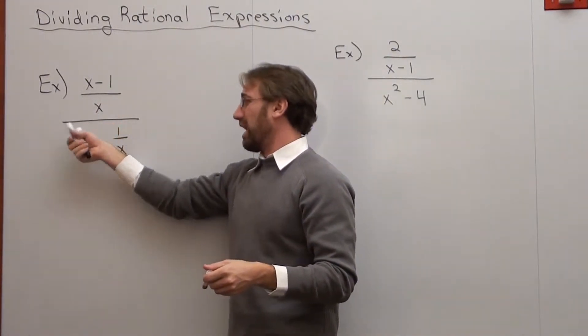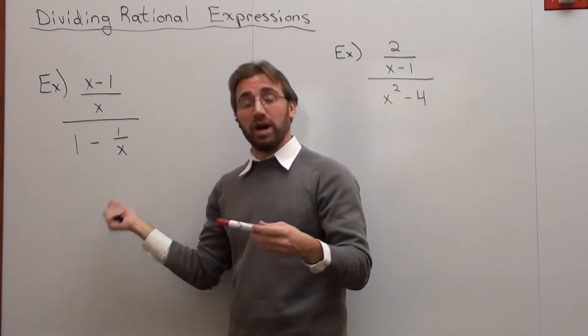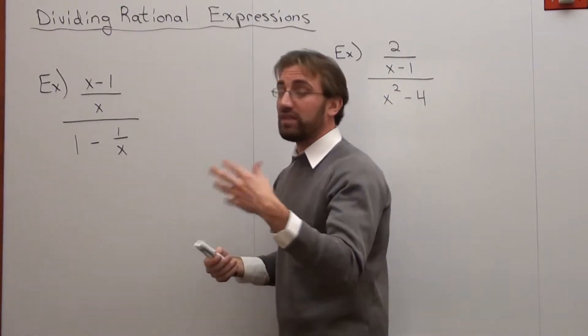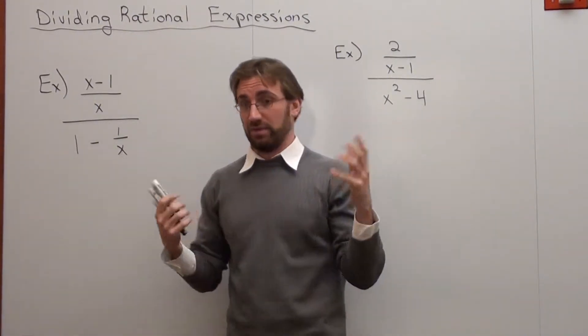I've got x minus 1 divided by x, and that's all divided by 1 minus 1 over x. I believe that's the way it was sent. That's my interpretation of what I got from the message.